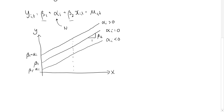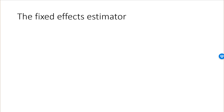The important point is that the error term is now mu_it, and the explanatory variable is exogenous with respect to this error term. The cost is that we have to estimate n new parameters, which decreases the efficiency of the estimate of beta_2. The basic idea behind the fixed effect estimator is to introduce n minus 1 dummy variables and add those to the regression model. You can then estimate it using OLS and obtain a consistent estimator.